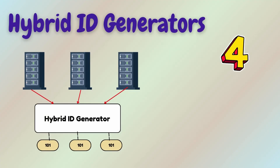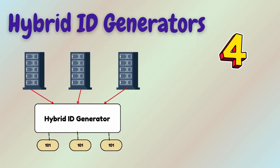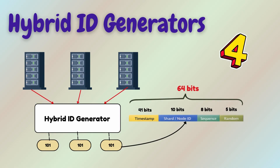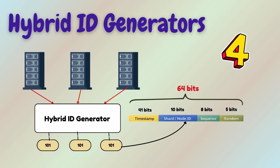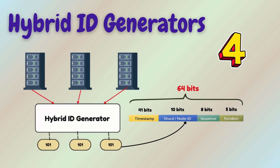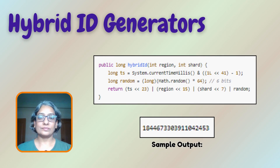Let's combine the best ideas and build a hybrid. Modern systems often use hybrid ID formats tailored to their needs, typically combining time, shard, sequence, and a bit of randomness. The Java code shown here generates a hybrid ID.